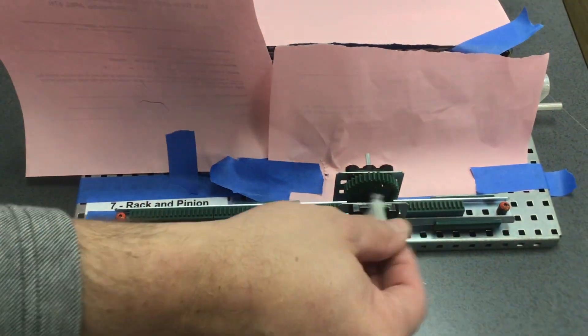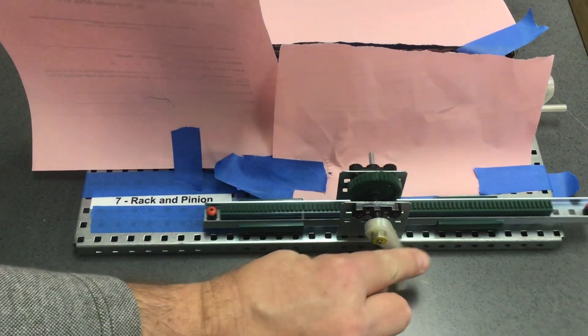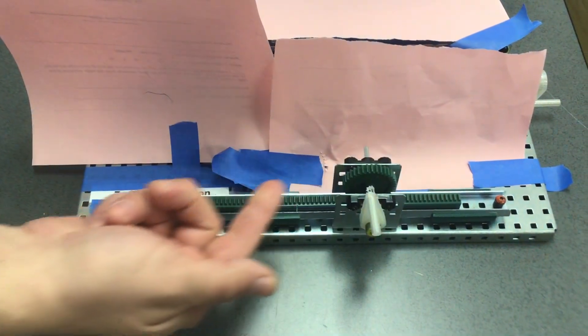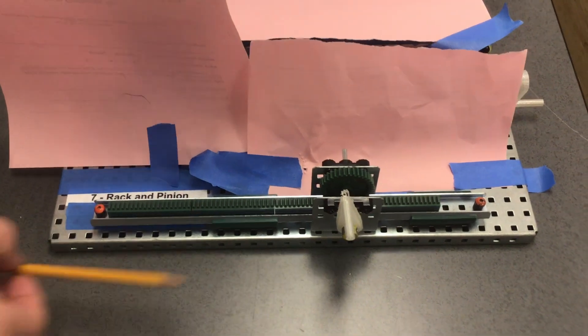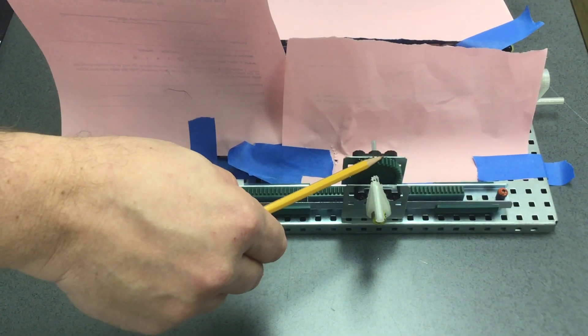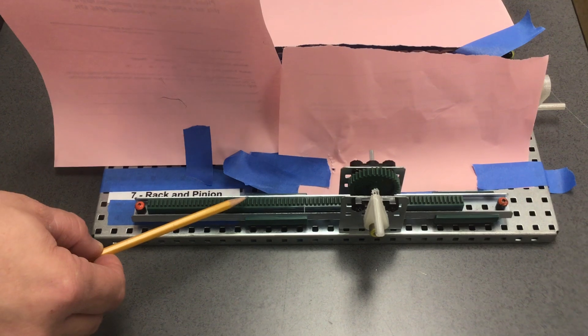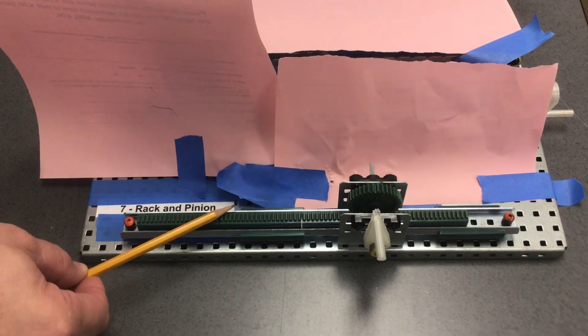I turn the handle one direction, the rack goes in one direction. I turn the handle the other direction, the rack goes the other direction. That's linear movement. So we go from rotary movement on the pinion gear to an output movement of linear on the rack.